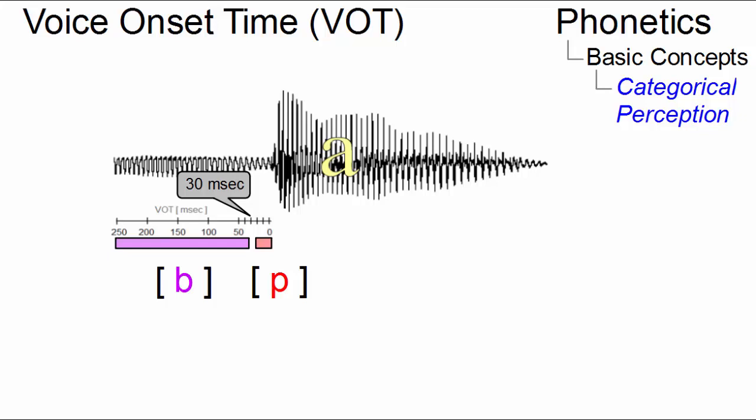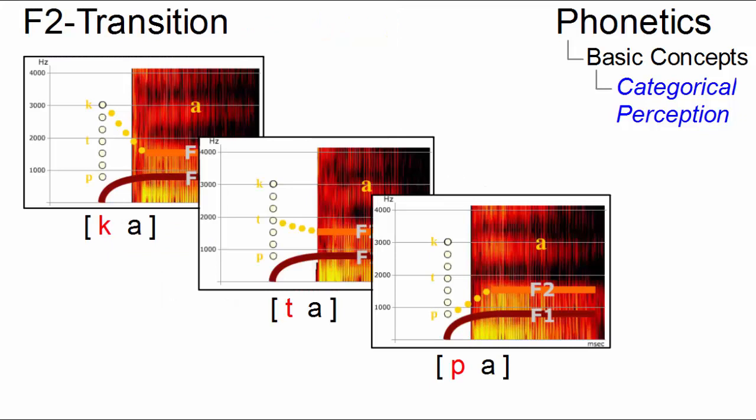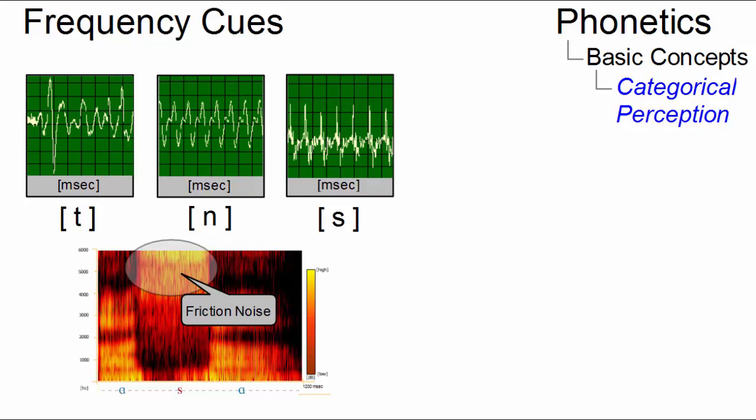Other perceptual categories relate to the origin of the second formant, that allow us to distinguish between different places of articulation, or frequency patterns that help us to identify a larger number of speech sounds.